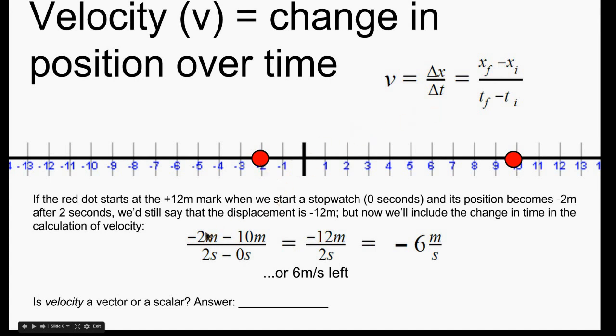So to plug it into our equation, our final position is negative 2 meters minus our initial position, which was at a positive 10 meter point, but we're subtracting it. Our final time was 2 seconds. Our initial time was 0 seconds. So we get negative 12 meters divided by 2 seconds or negative 6 meters per second. So the units for velocity are meters per second.